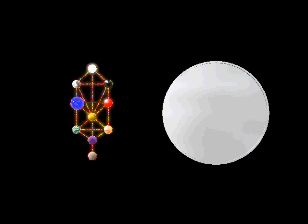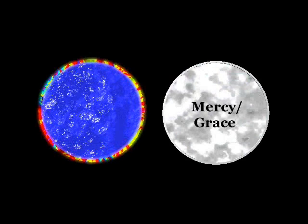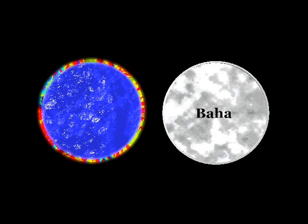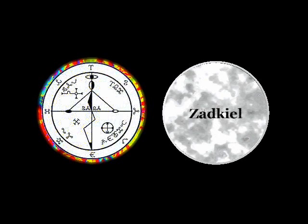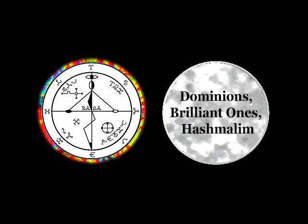Sephirah Chesed. Title: Mercy, Grace - Only God Can Know the Heart. Divine Name: Bahha from Bahai. Archangel Zadkiel, Prince of Justice, Mercy of God. Angelic Order: Dominions, Brilliant Ones, Hashmalim.